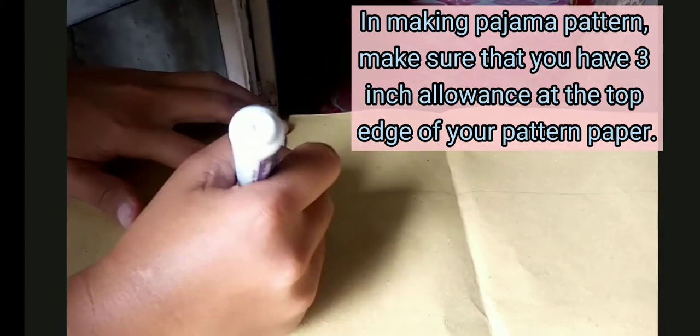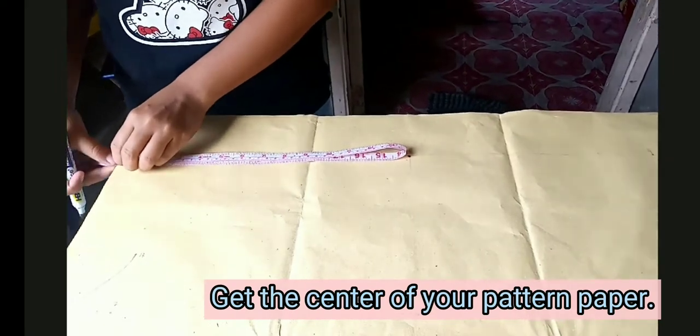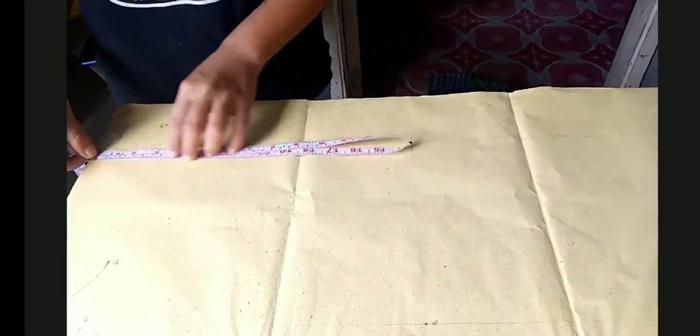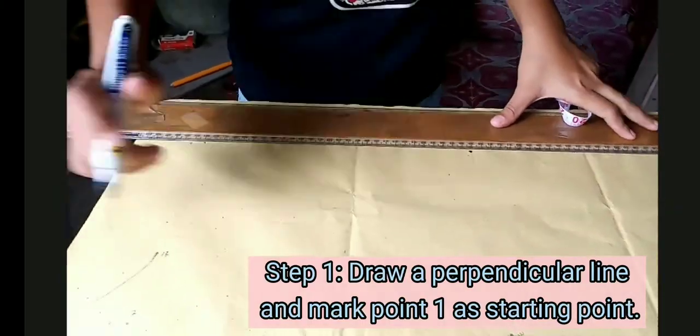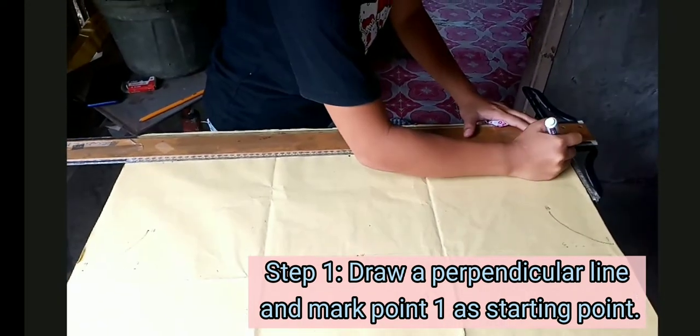Make sure that you have 3-inch allowance at the edge of your pattern paper. Get the center of your pattern paper. Draw a perpendicular line and mark point 1 as a starting point.